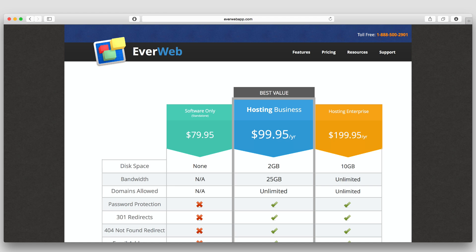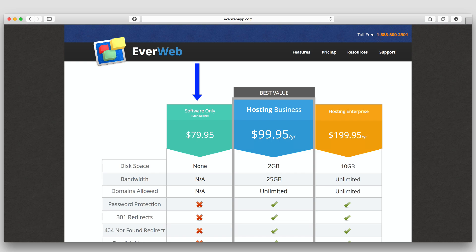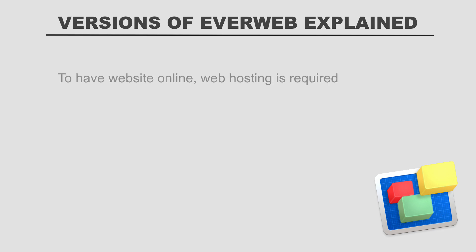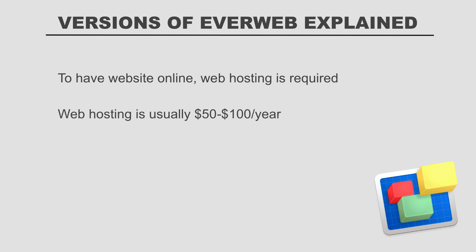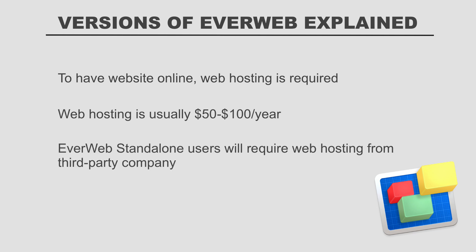When purchasing EverWeb, you have three options, two of which are the most common. The standalone version of EverWeb is $79.95 and requires that you have your own web hosting. Web hosting is required to have any website up and running online, and typically runs between $50 and $100 per year. Users who purchase the standalone version will usually have web hosting through a company other than EverWeb.